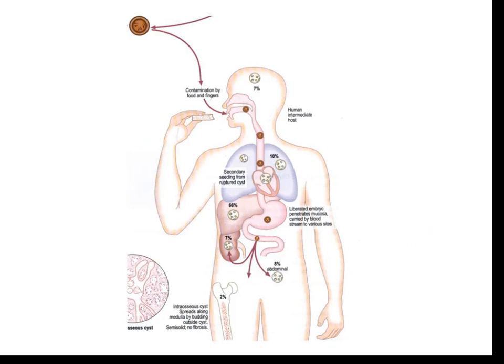If man gets infected through contaminated food and water, a similar process happens in the body. The oncosphere — the hexacanth embryo — penetrates the intestinal wall and reaches the liver. The most common organ affected is the liver, because the oncosphere first reaches there; especially the right lobe of the liver is most commonly affected. From the liver through the heart, the oncosphere can reach the lungs, making the lungs the second most commonly affected organ. Following the lungs, the oncosphere can seed into any organ in the body, where it can develop a hydatid cyst.